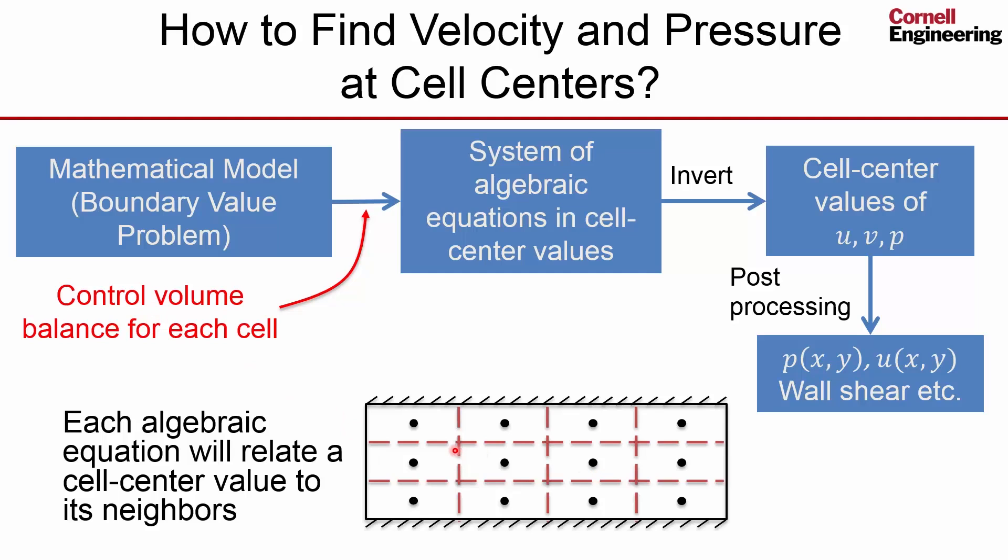Here, the other difference is that where we are calculating the unknowns in our particular flavor of the finite volume method, we are calculating the unknowns at the cell centers. The finite element method, you typically do it at the nodes, which can be the corners and also the midsides. But that's a relatively smaller difference compared to how you derive the system of algebraic equations.